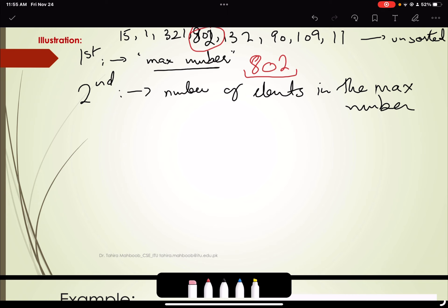Or we count the number of elements in the maximum number. So here we have three elements in the maximum number. How many digits we have in this number? Which is three digits.